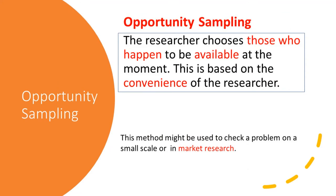There is another method of non-random sampling called opportunity sampling. In opportunity sampling, the researcher chooses those who happen to be available at the moment. This is based on the convenience of the researcher and might be used to check a problem on a small scale or in market research.